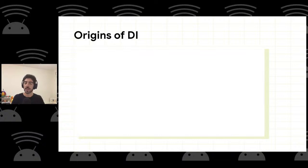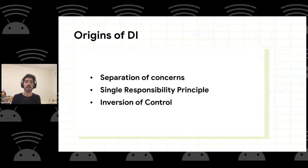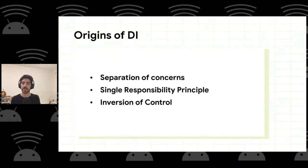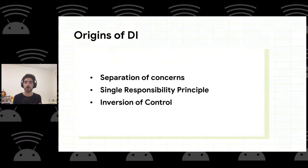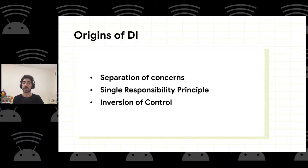Dependency injection comes with ideas from SOLID principles, like the single responsibility principle — a class should only have one reason to change — and separation of concerns, where each class should address a particular thing and be in charge of something. If a class has a particular responsibility and concern, it has to delegate work to other classes, and those other classes become its dependencies.